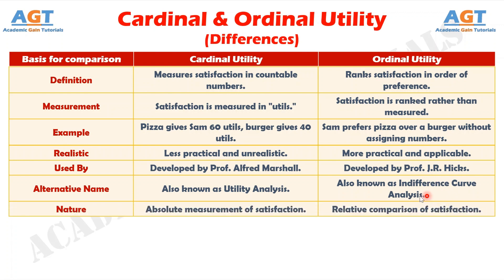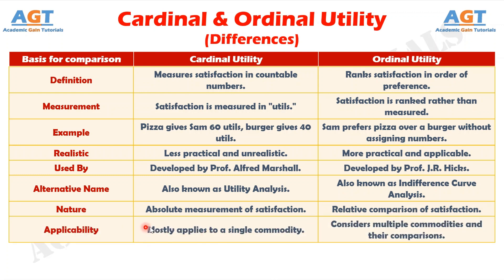Number 7: cardinal utility involves an absolute measurement of satisfaction, whereas ordinal utility is based on relative comparisons of satisfaction levels. Number 8: cardinal utility is usually applied to a single commodity, whereas ordinal utility can be used for comparing multiple commodities and their preferences.